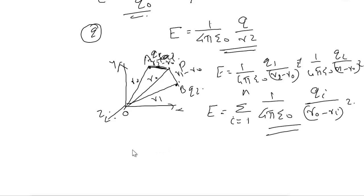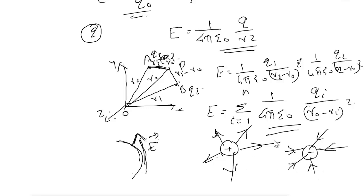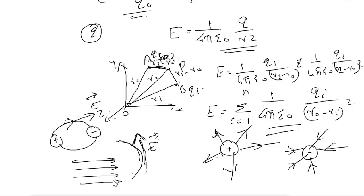Next are electric field lines. An electric field line is a straight or curved path in an electric field along which the tangent gives the direction of electric field intensity. For a positive charge, the lines move outward in straight lines. For a negative charge, they move inward. For one positive and one negative charge, the lines go from positive to negative. For a uniform electric field, lines are represented as parallel lines.